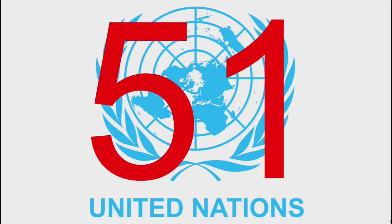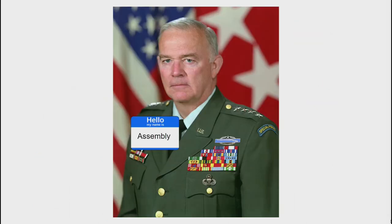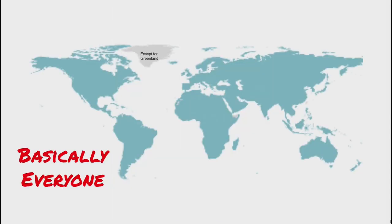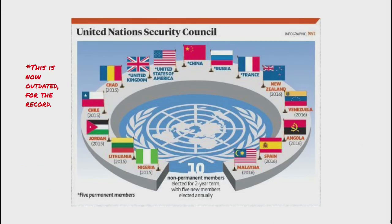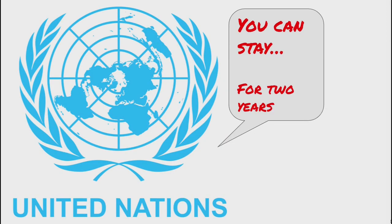As of its founding, 51 nations from across the world were member states. Just like the League of Nations, the United Nations is incredibly complex, with a myriad of organs, assemblies, and legal bodies. But the basics are: there is a General Assembly, which as of today consists of 193 member states, and is responsible for the deliberation and policymaking of the UN. There is also the Security Council, made of five permanent members — those being the USA, the UK, France, Russia, and China. The Security Council also consists of ten nations elected to their positions for two-year terms.